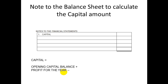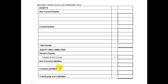Before you do a balance sheet in your test or exam, make sure you complete the income statement first so you can get the profit for the year. Then subtract your drawings — that's money you've taken out as an owner for your own personal use. Finally, that gives you your capital figure — the capital at the end of the year — which goes back into the balance sheet under note one.